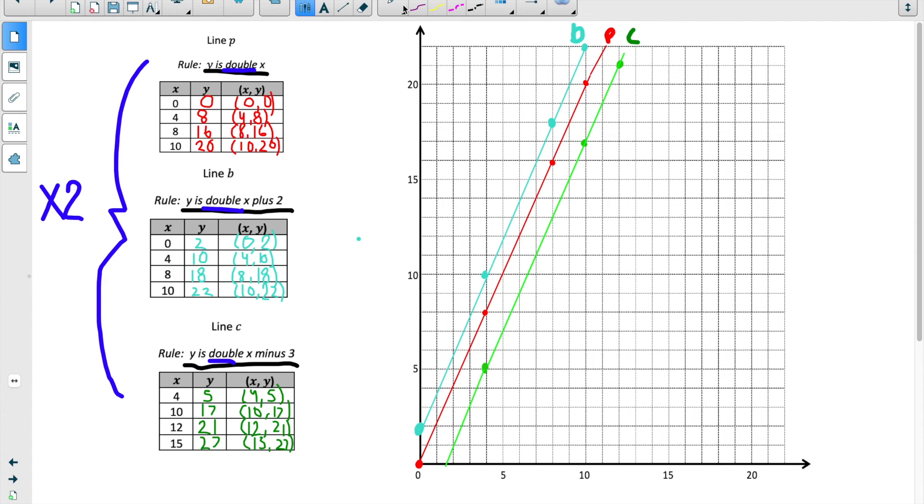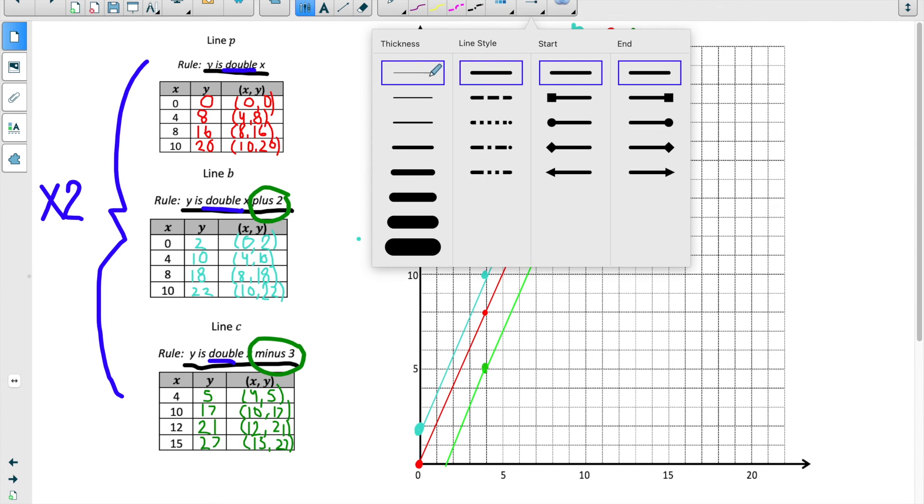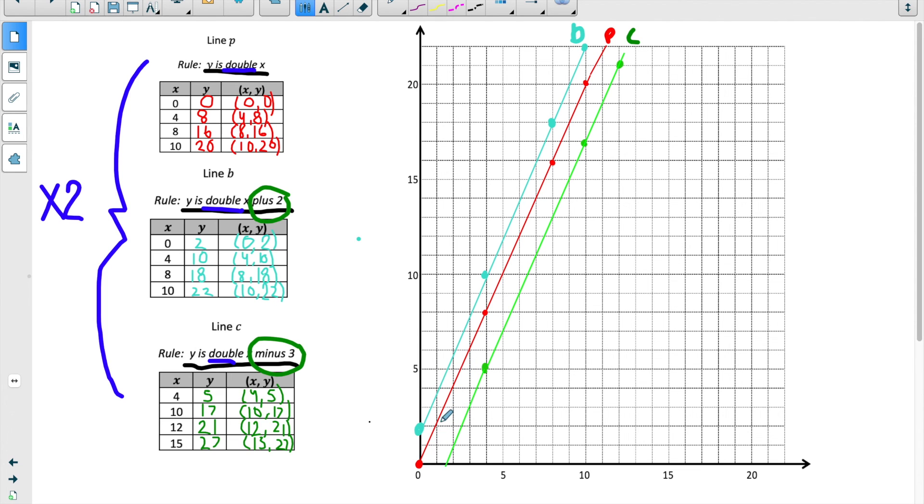And this has to do with how much we added. So this is relating to addition rules. Here, in line B, we added plus 2. In line P, we didn't add or subtract anything. And in line C, we subtracted 3. And if you notice, this really shows up on the coordinate plane. Because if we look at line P, we didn't add or subtract anything. But then we can notice that each point on line B is 2 units higher for each point. 2 units higher. And this has to do with the adding 2. And then on line C, for each one, it's 3 units lower than line P. And this has to do with the subtracting 3.